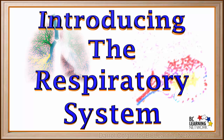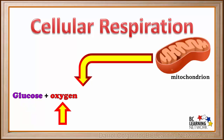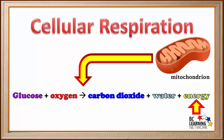The respiratory system is a group of organs that perform some very important tasks in our body. In the mitochondria of every cell in our body, a process called cellular respiration is carried out. In cellular respiration, glucose, which is carried by the bloodstream, reacts with oxygen, also carried by the bloodstream, to produce carbon dioxide, which goes back into the bloodstream, water, and energy.